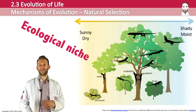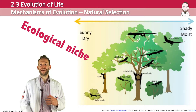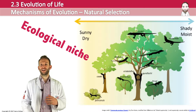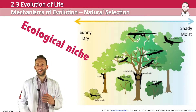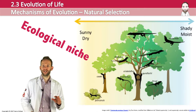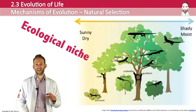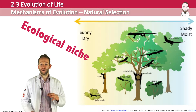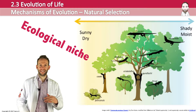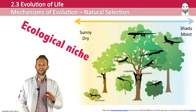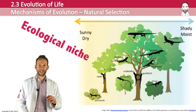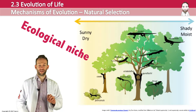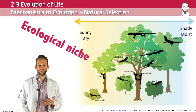Here is an example: 11 species of anole lizards are all occupying a different niche by eating different vegetation, using different amounts of sunlight or moisture, or living at slightly different elevations. They can all coexist because each has evolved very specifically to occupy one ecological niche, and they are therefore not in direct competition with each other.